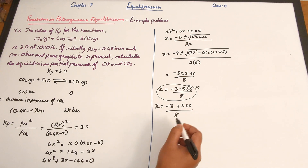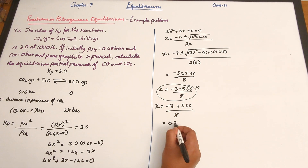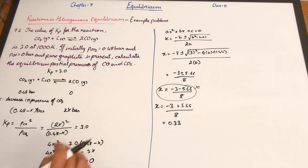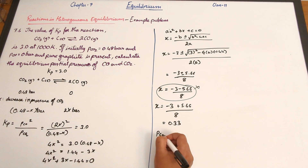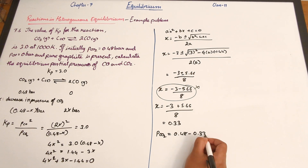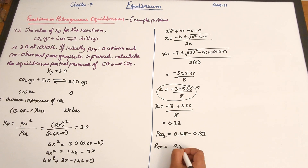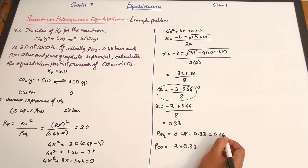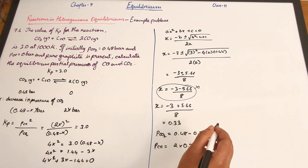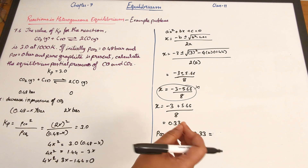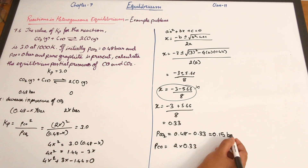Taking the positive root, (minus 3 plus 5.66) divided by 8 gives X equals 0.33. So at equilibrium, the partial pressure of CO2 equals 0.48 minus 0.33 equals 0.15 bar, and the partial pressure of CO equals 2 times 0.33 equals 0.66 bar.